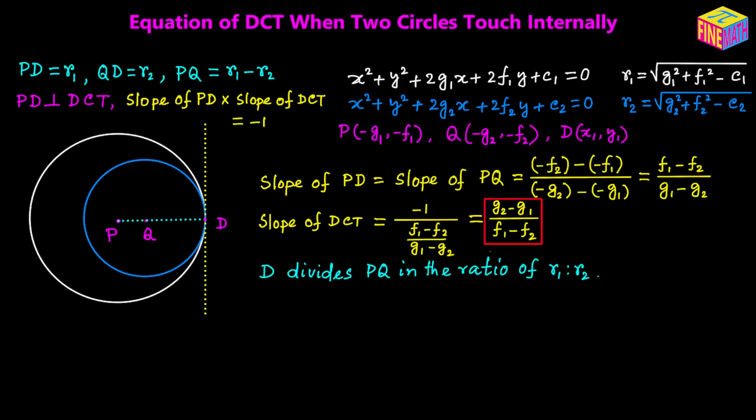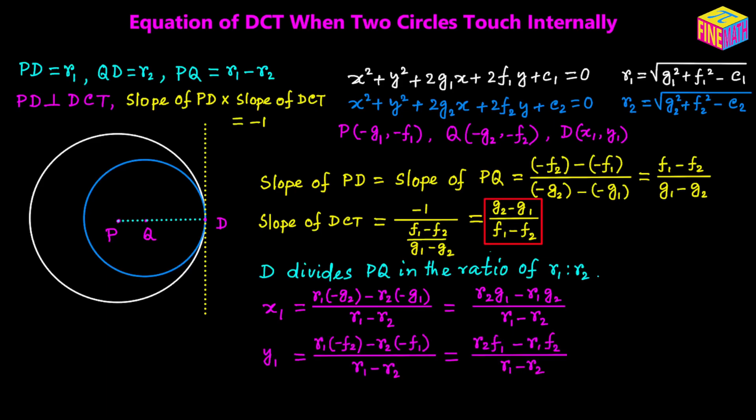If you carefully look at the diagram, D divides PQ externally in the ratio R sub 1 to R sub 2. Using the section formula for external division, we can easily find the coordinates of D. The X coordinate is found by applying the external division formula, and similarly the Y coordinate of D is found the same way.